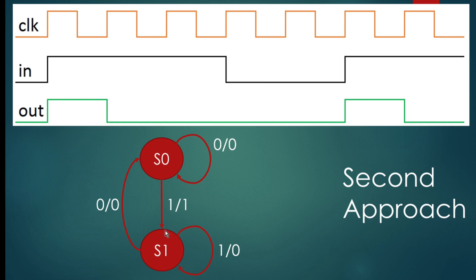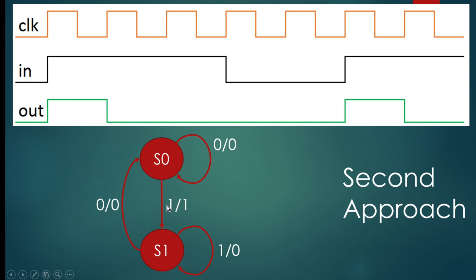Two states can be implemented with one flip-flop, so hardware and area will be less compared to a Moore state machine. Let us assume our state machine rests in state S0. When input is zero we remain in S0 and output is zero. As soon as we detect the first positive edge - whenever input goes high - output should be high for only one clock cycle, so we change state to S1.